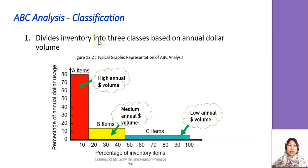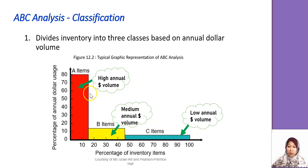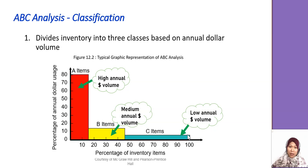ABC analysis is how to classify inventory. Usually we classify items as A, B, or C. Item A involves high annual dollar volume — sometimes expensive or high-volume items. Item C is low annual volume and low price, meaning the stock quantity and price are not that high. Later we will look at an example of how to classify inventory.